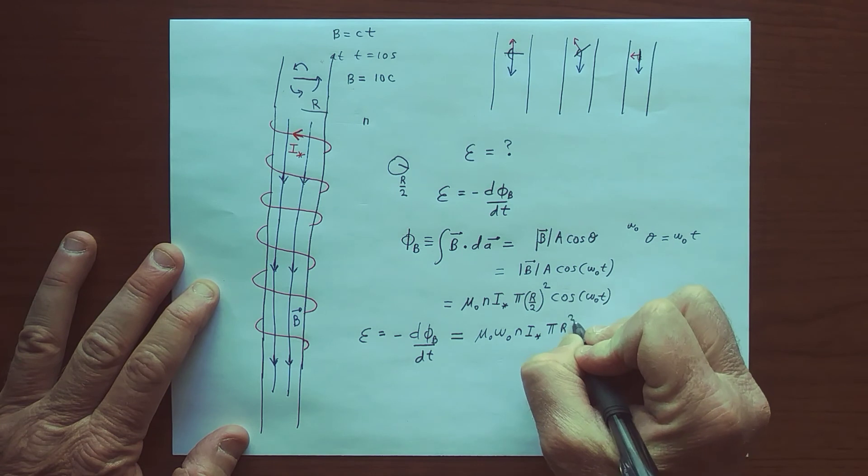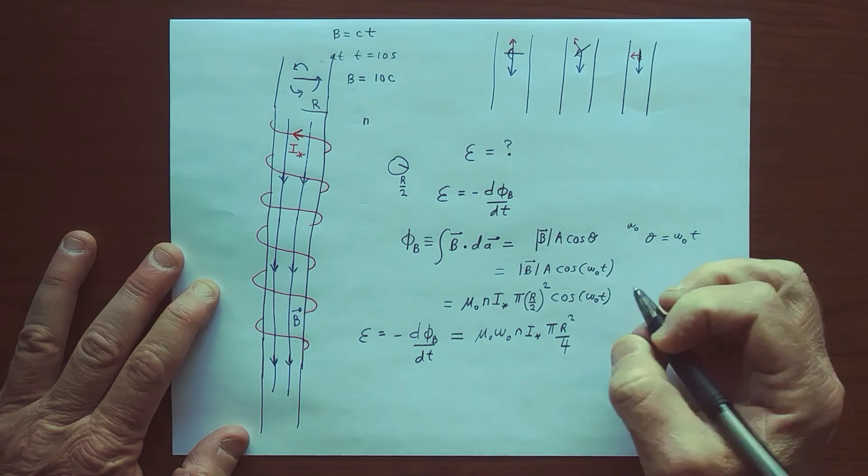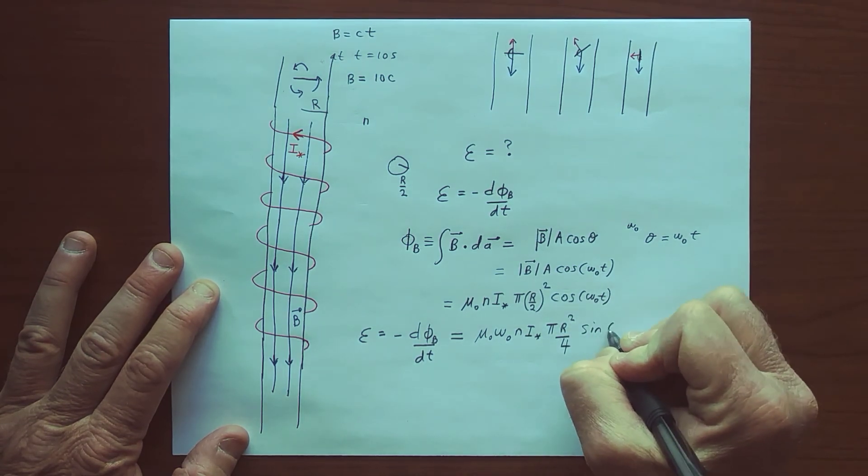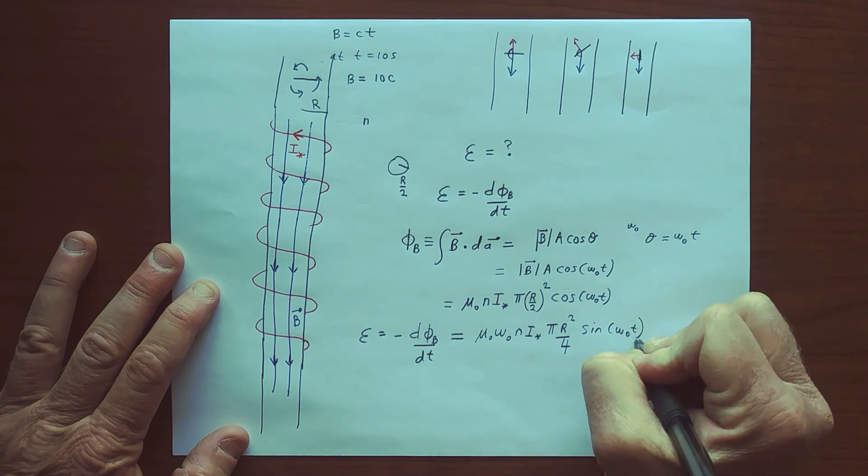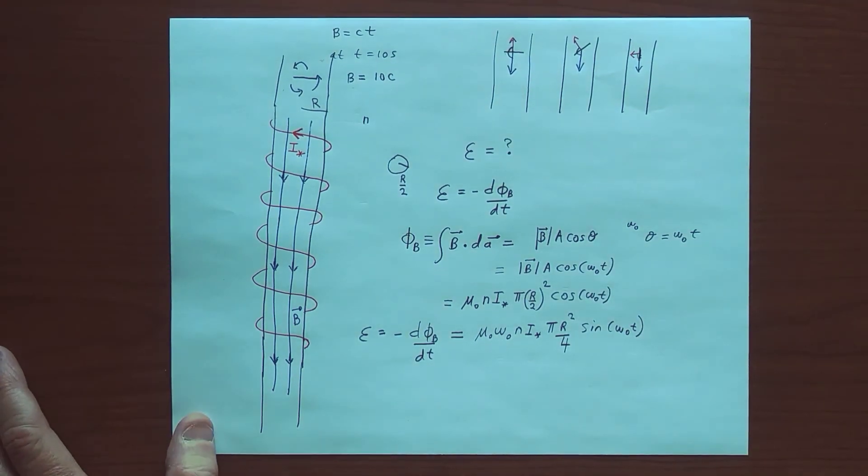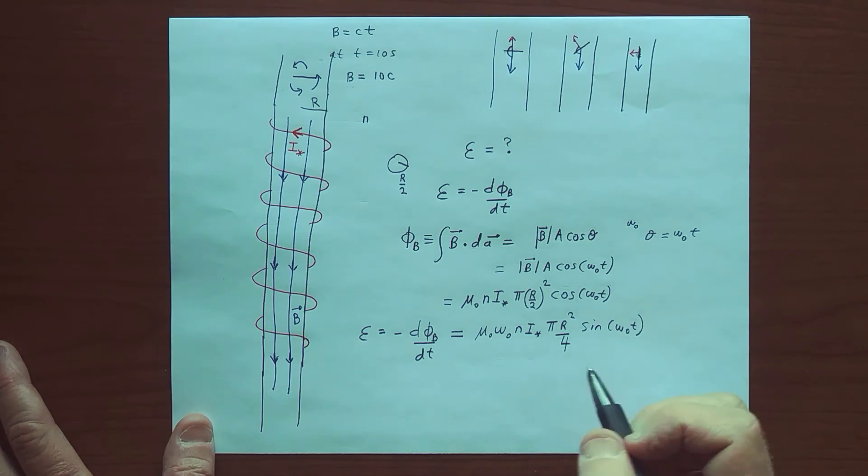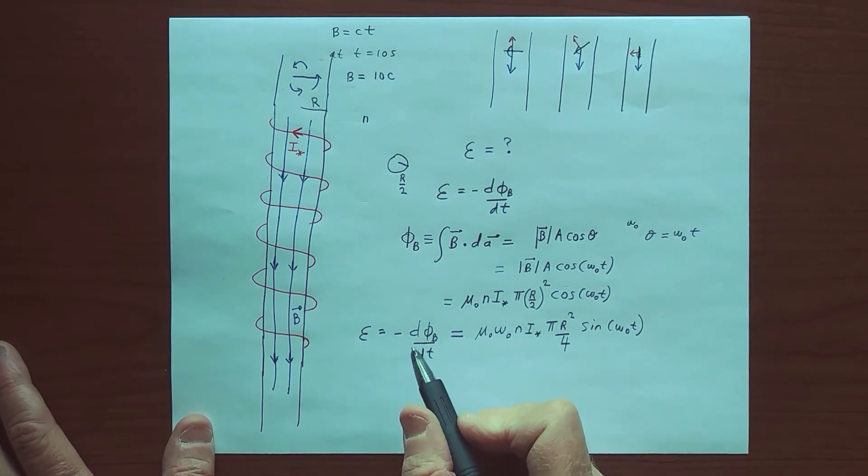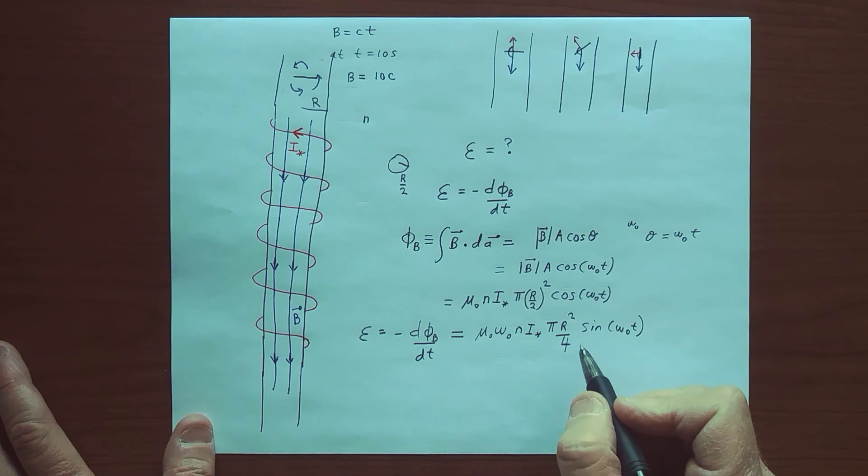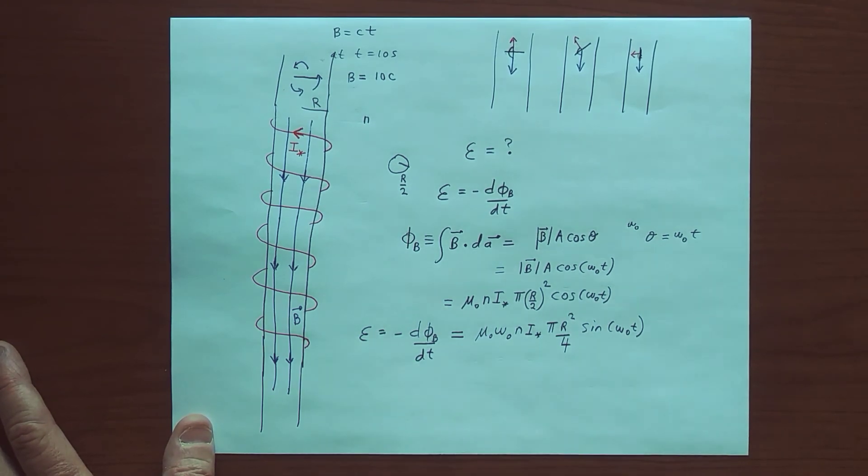I have mu naught omega naught n i star times pi r squared over four times the sine of omega naught times t. So you can see that the EMF is changing sinusoidally with time. And if we wanted to find the induced current, we would have to take the EMF and divide it by the resistance of the coil.